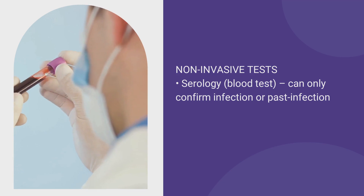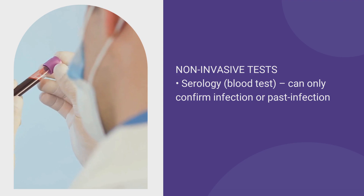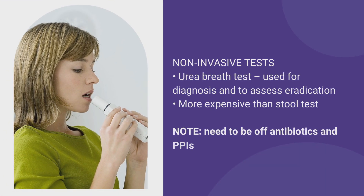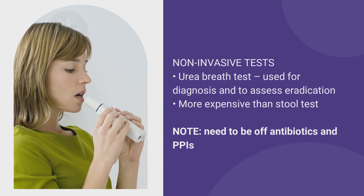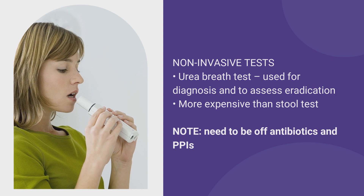The third non-invasive test is the urea breath test, where you ingest a substance and the amount of urea in your breath is measured over a period of time to detect H. pylori. This is also a very good test for both diagnosis and confirming eradication, but it is more expensive, which is why the stool antigen test is more commonly used. Importantly, because acid and medications can suppress the infection's detectability, you need to be off antibiotics and off proton pump inhibitors before these tests to get the most accurate result.